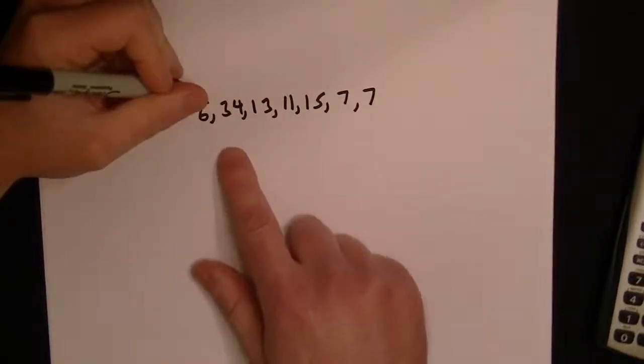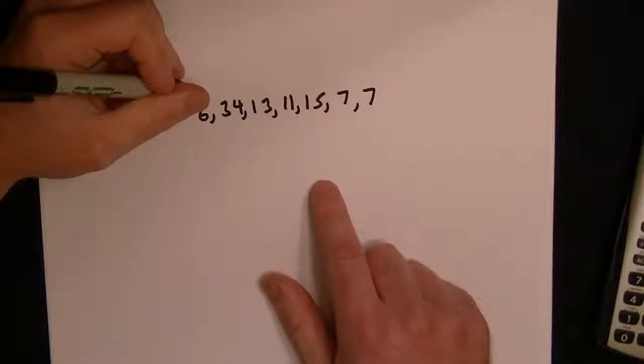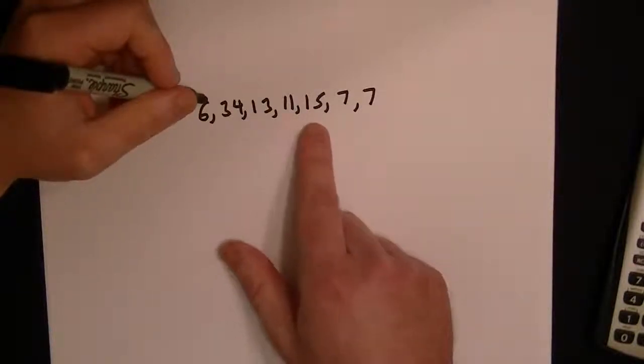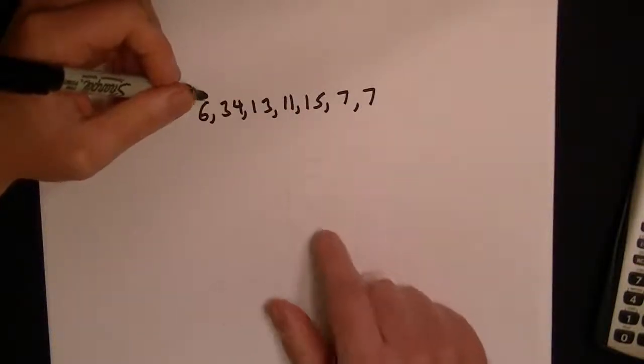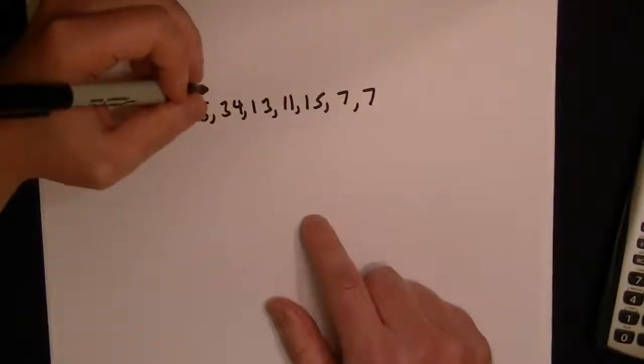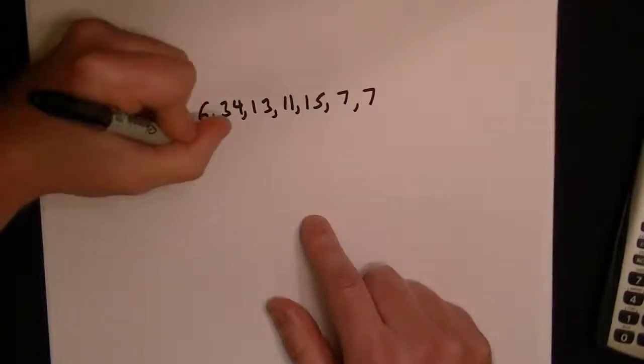To find the mean, you get the sum of the numbers and then divide by the number of numbers that you've summed. It sounds a little confusing, but it's pretty simple. I'll just show you.